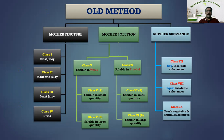For mother tincture, Hahnemann classified into four classes based on the moisture or water present in the drug substance. Class one is most juicy plants, class two is moderately juicy, class three is least juicy, and class four is dried plants or dried animal drug substances.